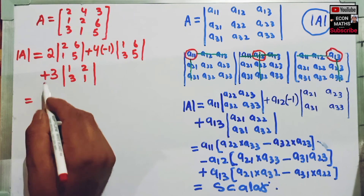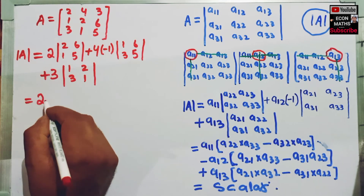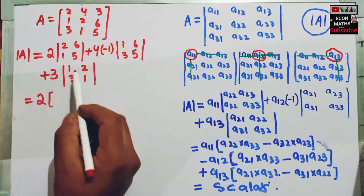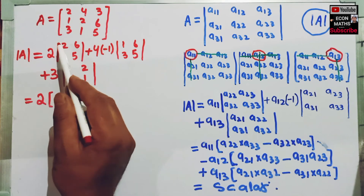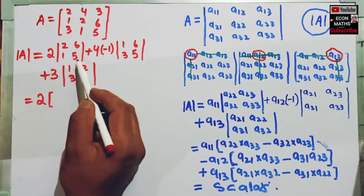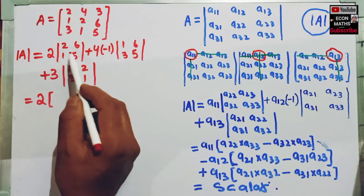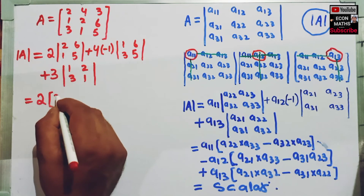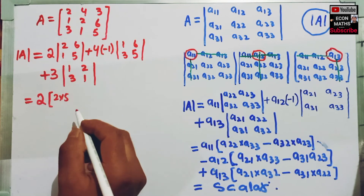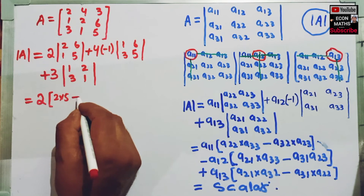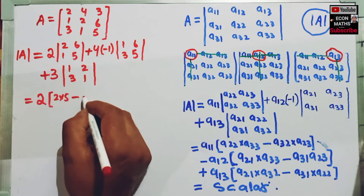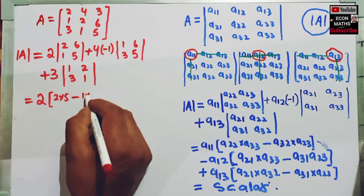Solving this, here it is 2. Multiplying the principal diagonal elements, that is 2 into 5. So this is 2 into 5 minus the product of the non-principal diagonal elements, that is 1 into 6.